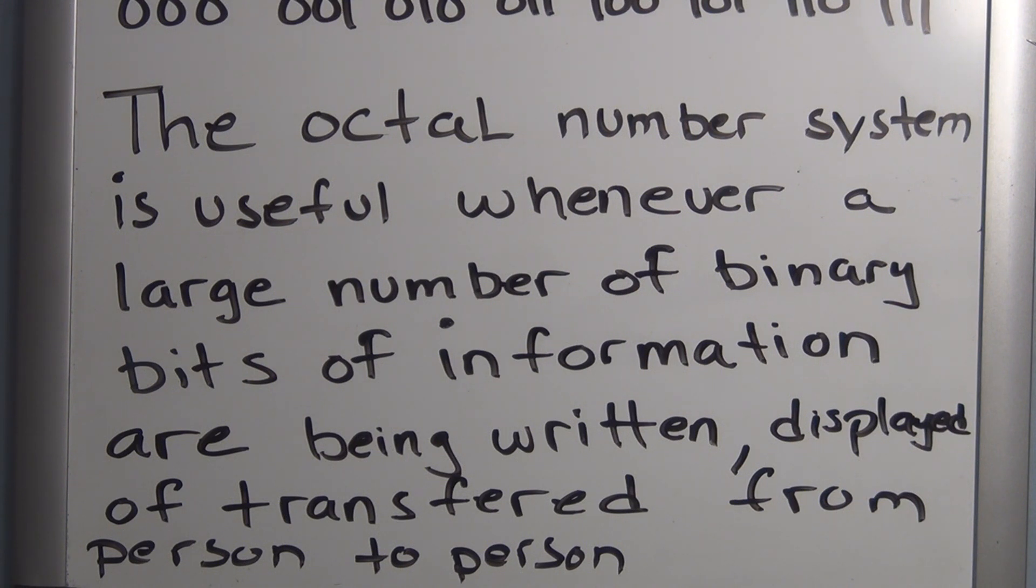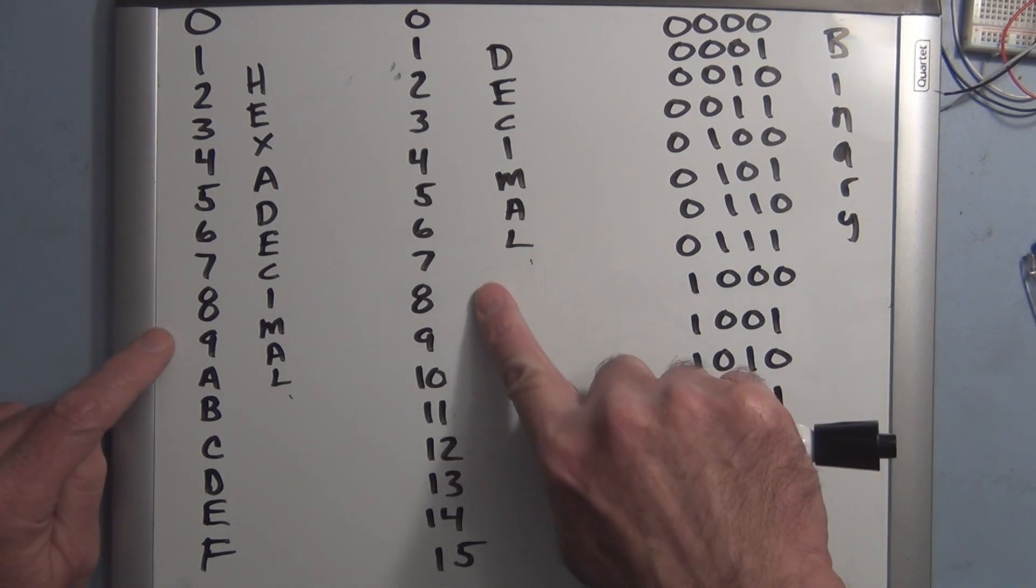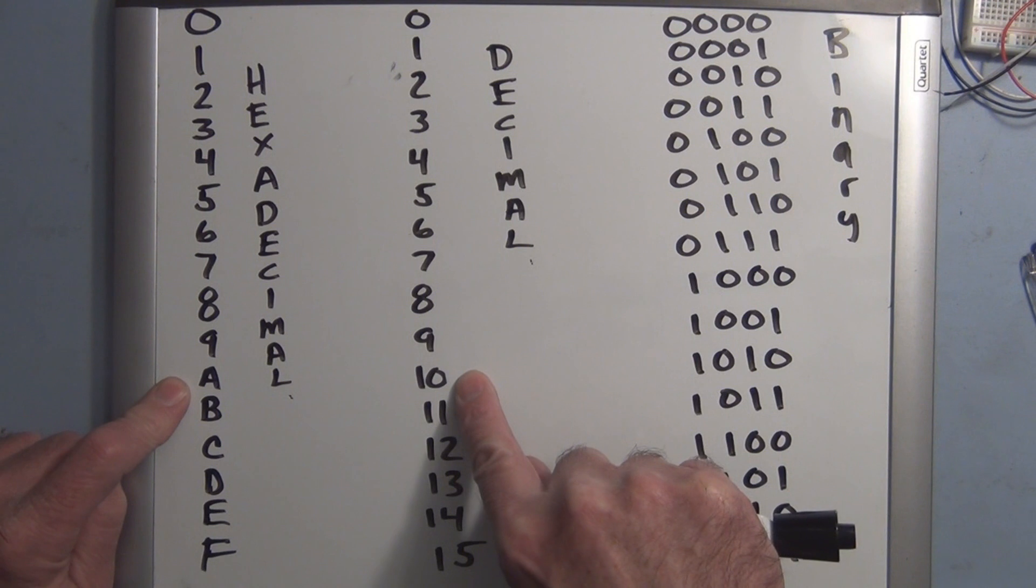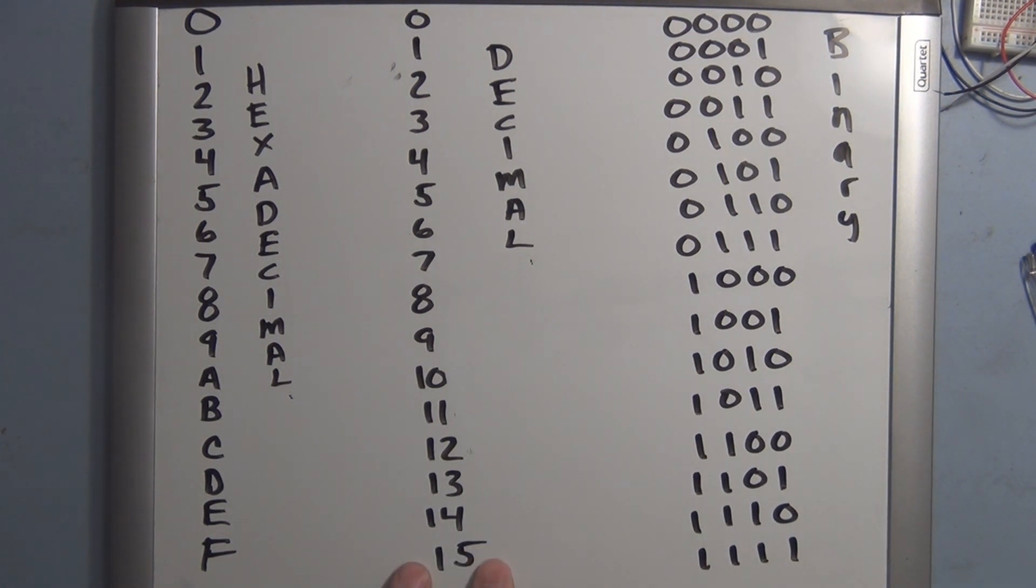And an even better way to represent binary information, to make it more manageable, is by converting it into the hexadecimal system. So let's take a look at the hexadecimal system. Now the hexadecimal system is a base 16. So we have 16 symbols or digits. We have 0 through 9. And then the letters A, B, C, D, E, and F. The equivalent decimal is the same up until 9. But then we have A is equivalent to 10 in decimal. B is 11. C is 12. D is 13. E is 14. F is 15. Because we're counting up to 15,